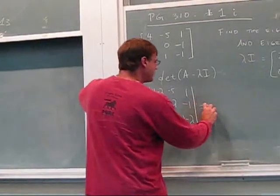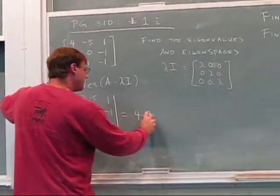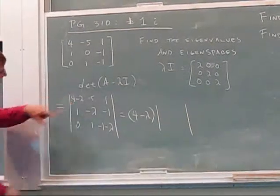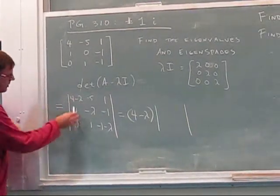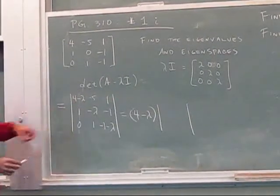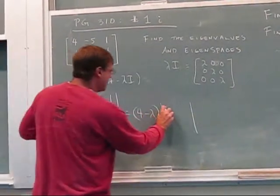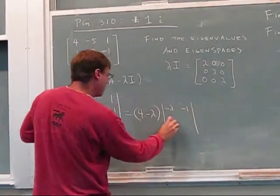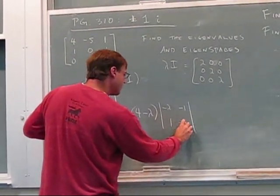Okay, so this is equal to 4 minus lambda times the determinant of what I have left when I remove this row or this column. If I have this block left: negative lambda, negative 1, 1, negative 1 minus lambda.